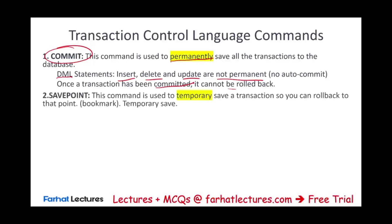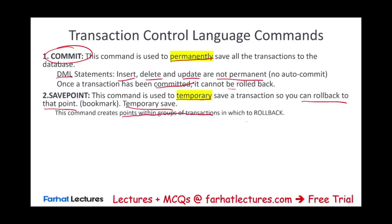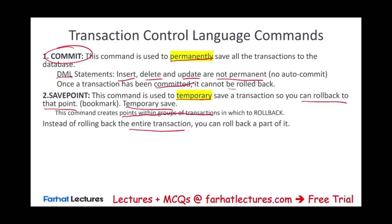The savepoint command is used to temporarily save a transaction — essentially bookmarking it. You might be halfway through a transaction and want to save progress up to a certain point. This command creates points within groups of transactions to which you can roll back later if needed. So instead of rolling back the entire transaction, you can roll back only part of it.